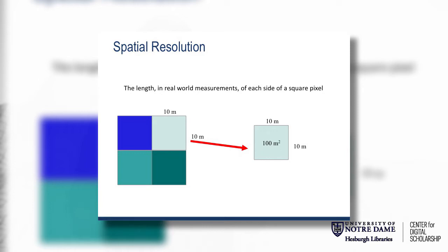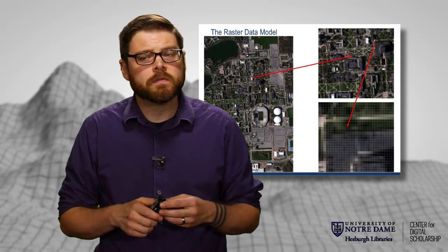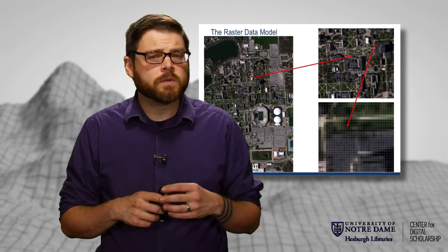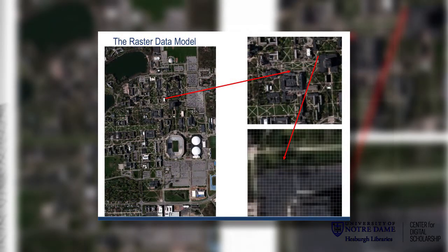The spatial resolution might be 10 meters on a side, so each pixel would cover 100 square meters, or it might be 5 meters on a side, so each pixel would cover 25 square meters. We can see this in a satellite image of Notre Dame campus — if we zoom in far enough, we can see that each pixel covers a distinct area in the real world, and once we get to that scale, we can't see any more data within there.